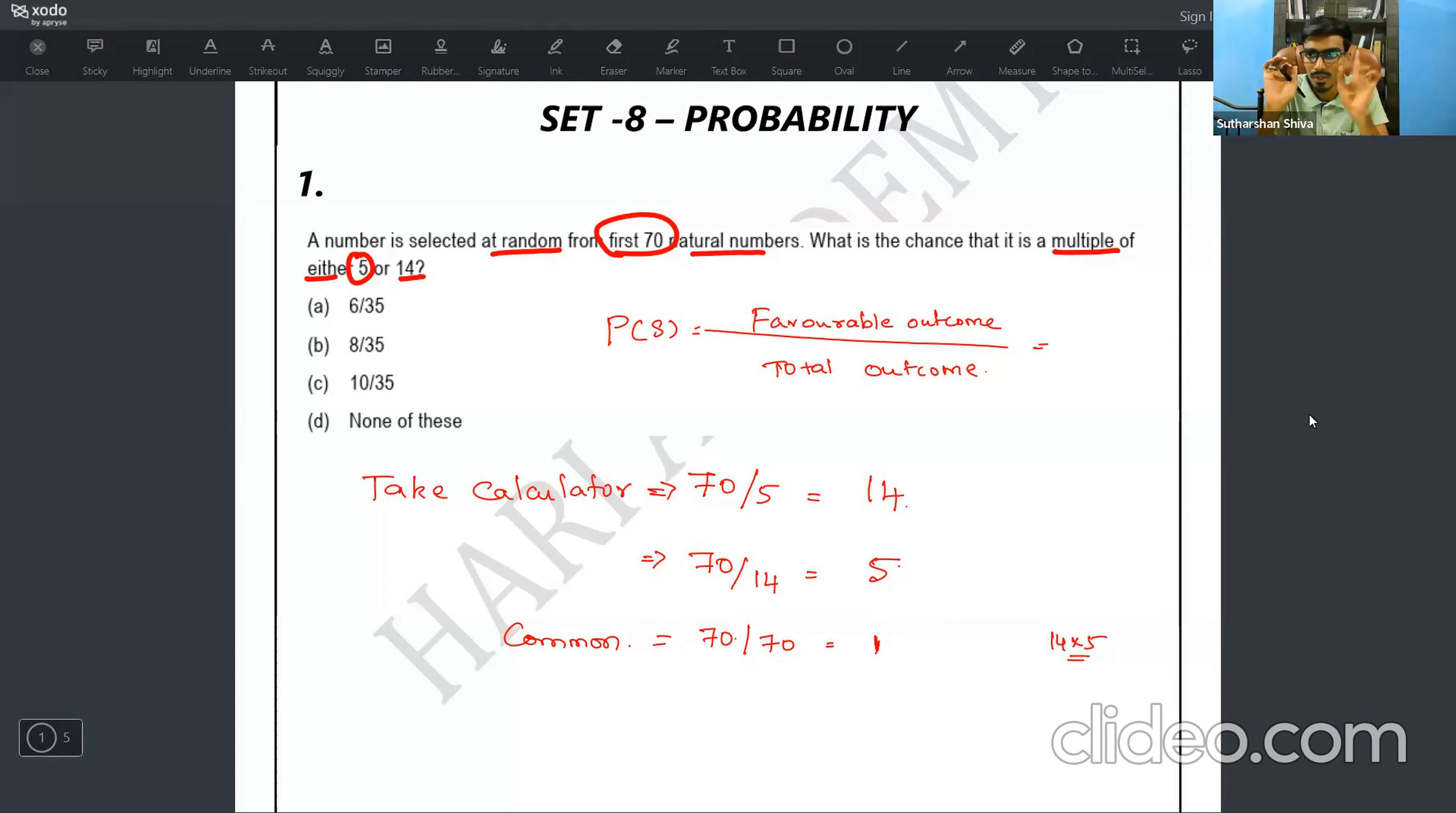And you need to remove the common multiples. Take a calculator, do what I say. 70 divided by 5. 70 divided by first 5. You will get 14 times. 14 into 5 equal to 70. So 14 numbers is going to appear. Then 70 divided by 14, if you put it, you will get 5.